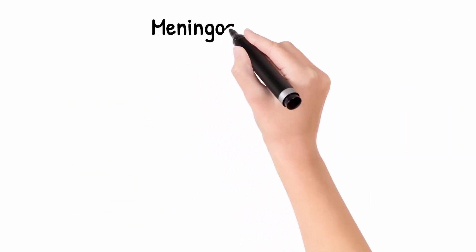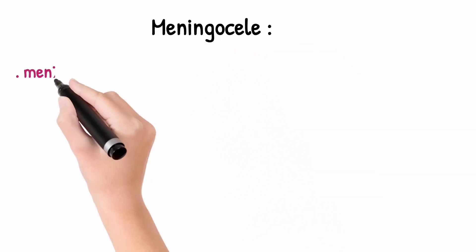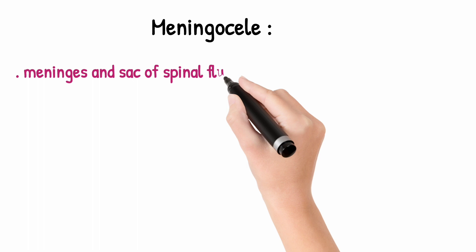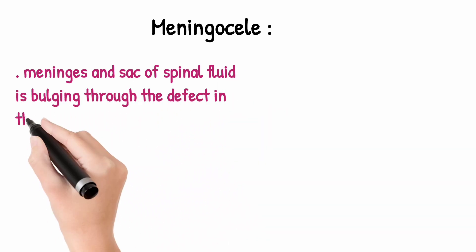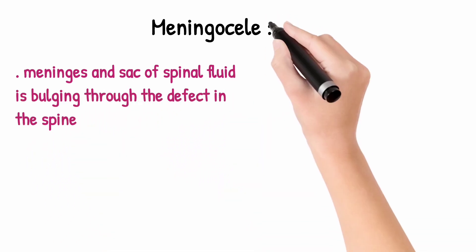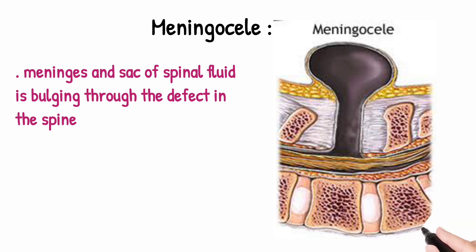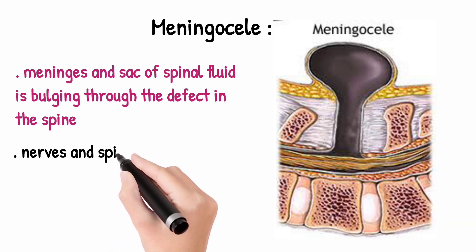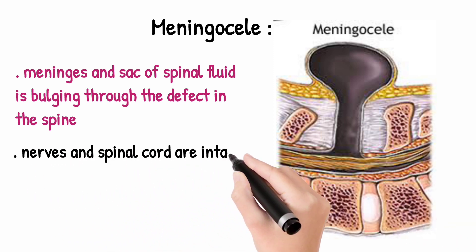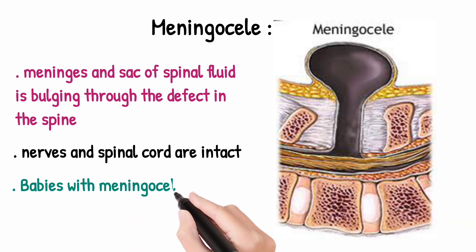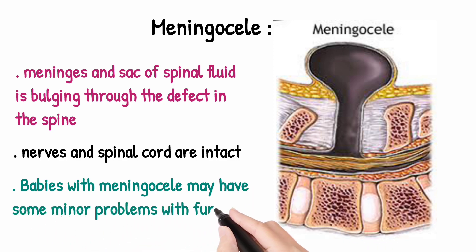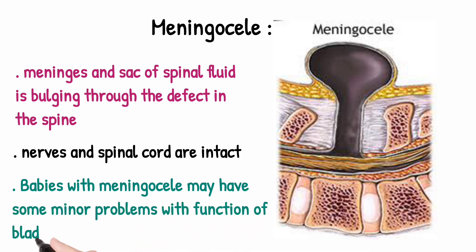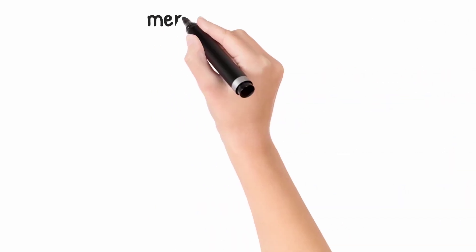Next is meningocel. In meningocel, the meninges and a sac of spinal fluid bulge through the defect in the vertebra. Nerves and spinal cord are intact. Babies with meningocel have some minor problems with function of the bladder and bowel.